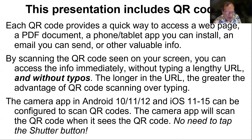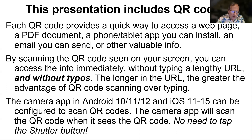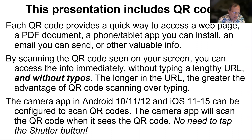If you have any of these versions of Android on your phone — 10, 11, or 12 — or iOS versions 11 through 15, your phone already has the capability to scan QR codes. It might not be enabled. You have to use the settings app to confirm that it is enabled — in the case of iOS, within the settings app itself; in the case of Android, within the settings of the camera app. The app will scan the QR code as soon as it sees it; you don't even need to tap the shutter button. It's a very convenient way to take advantage of information provided in presentations like this one.